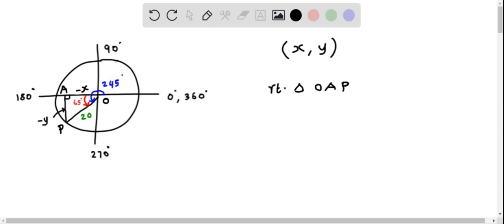I am going to first find sine of 65. Sine of 65 equals opposite over adjacent. The opposite to 65 degrees is AP, which is negative Y divided by hypotenuse OP. We can replace OP - this becomes negative Y over OP, which is basically the radius of the circle which is 20 units.